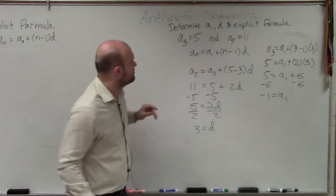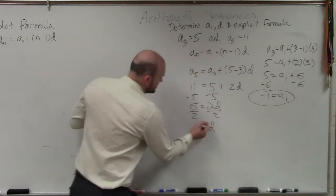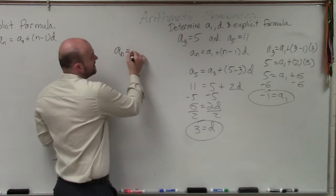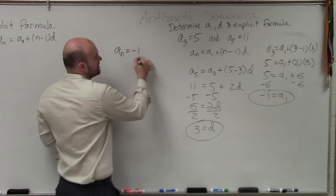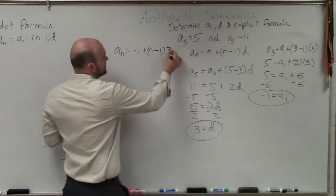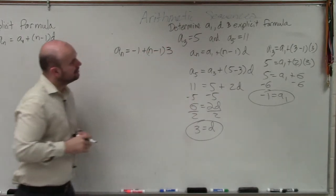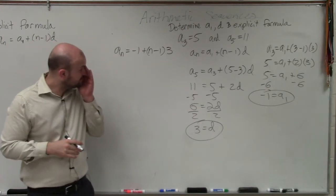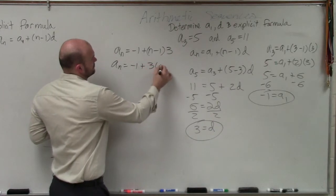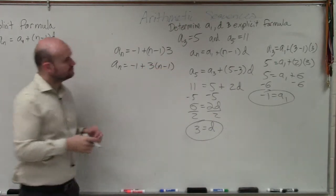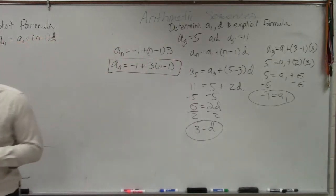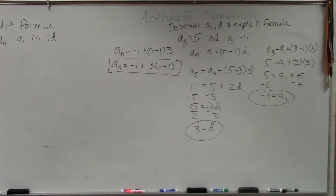Therefore, my explicit formula — now that I know A sub 1 and D — is A sub n equals negative 1 plus n minus 1 times 3, which is your D. And we can obviously simplify that formula as well.